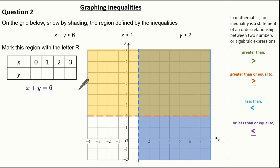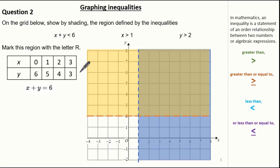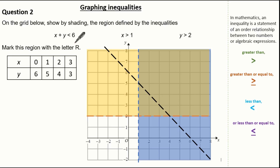To do this, I'm drawing a table with x values 0, 1, 2 and 3. For x plus y equals 6: when x is 0, y must be 6; when x is 1, y must be 5; when x is 2, y must be 4; when x is 3, y must be 3. Plotting these points gives this line. However, I've made it dotted because the inequality has to be less than 6.